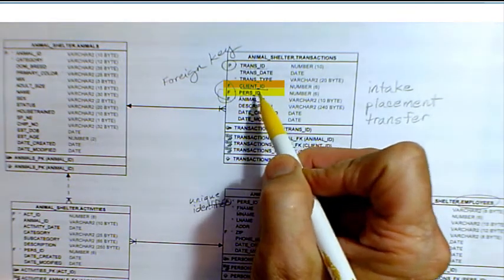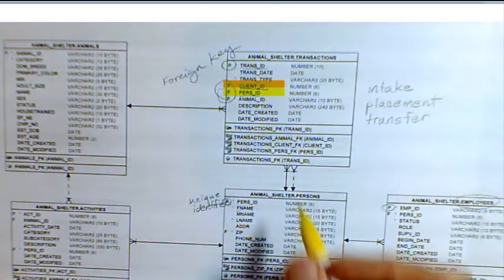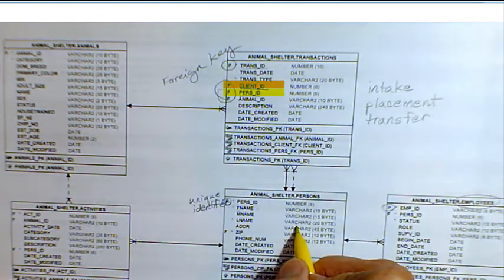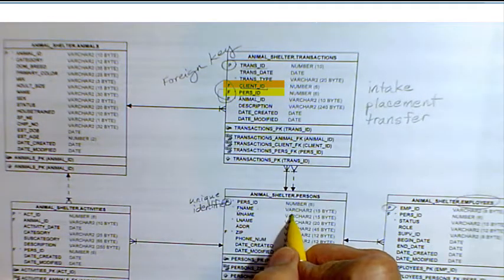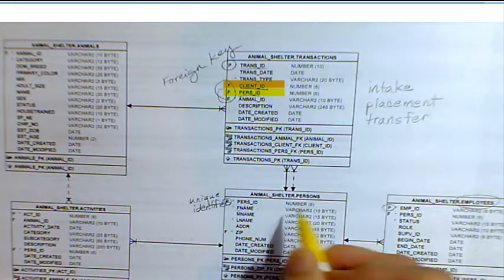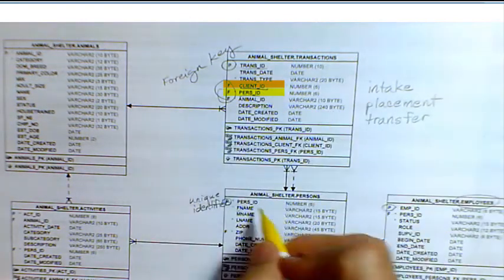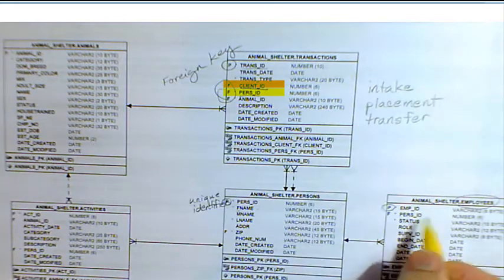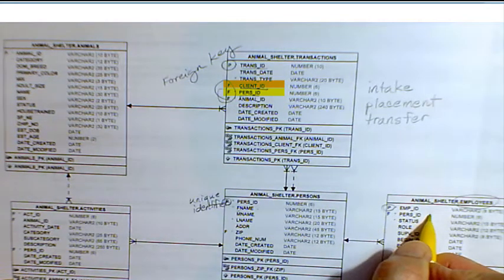These fields here are linked to: client ID is linked back to person ID for the person bringing the animal in. Person ID is linked back to person ID for the person who's an employee processing the transaction.